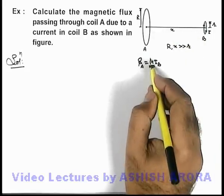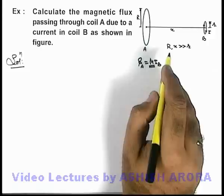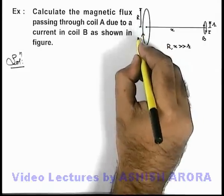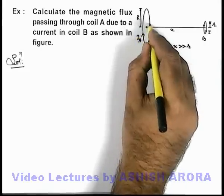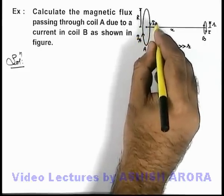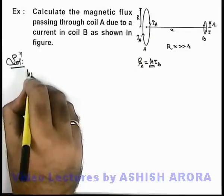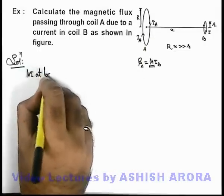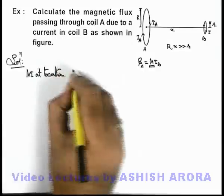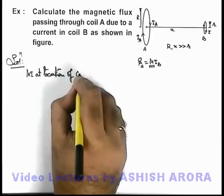So to calculate the value of M we go in a reverse manner. Like in coil A, say if a current i_A is flowing, then we can calculate the magnetic induction at location of coil B.